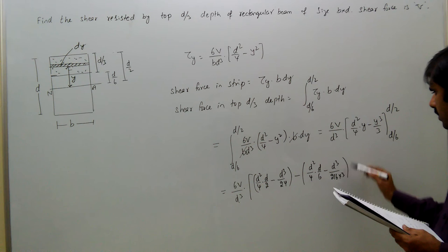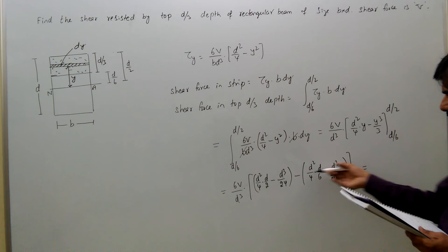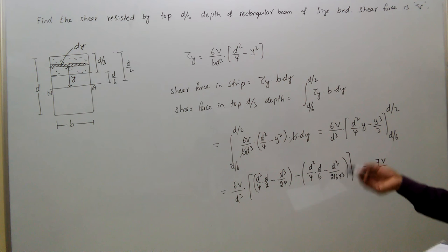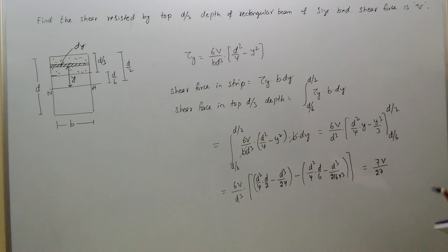So, simplifying, we get d cube d cube gets cancelled. So, 7v by 27 is the answer, that much ratio. If you want to calculate in percentage, you can calculate by multiplying with 100. So, this is the ratio resisted by the top d by 3.